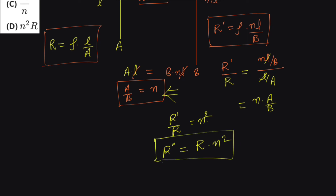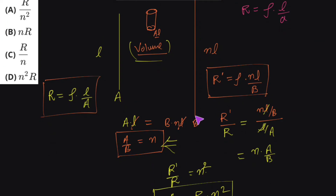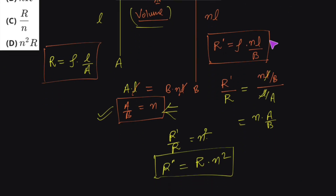The key concept in this type of question is that we equate the volume, because volume always remains constant — we've used the same amount of material and stretched the same wire without adding anything from outside. If the length increases by n times, the cross-sectional area decreases, and we find the new cross-section area by using the volume relation, then divide to get the new resistance.